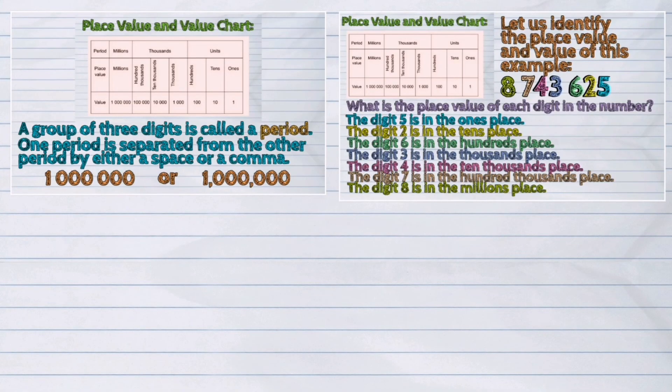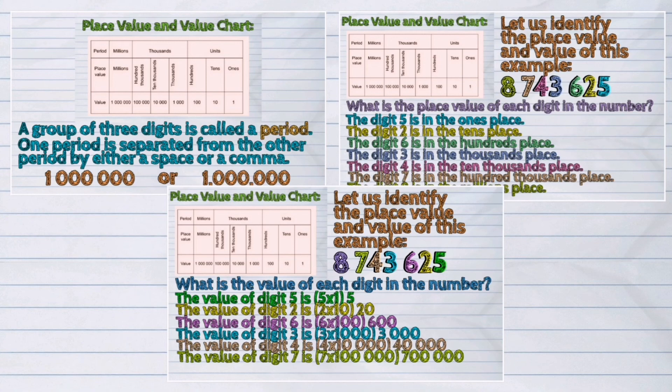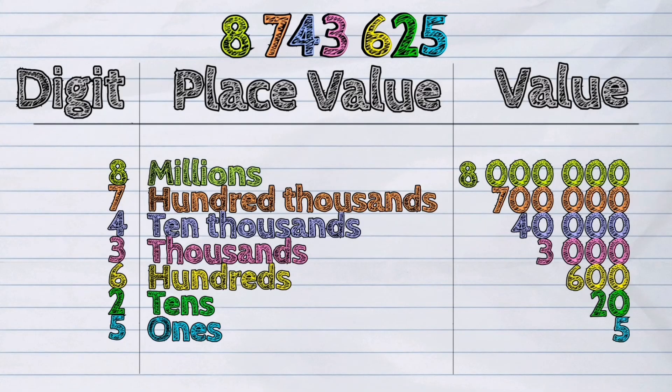And those were the place values and values through millions. This chart is the conclusion of our example.